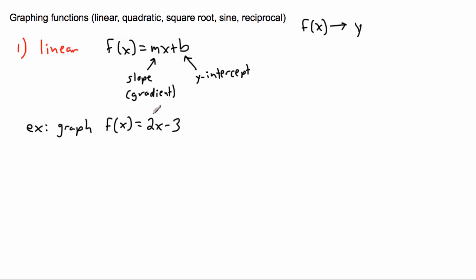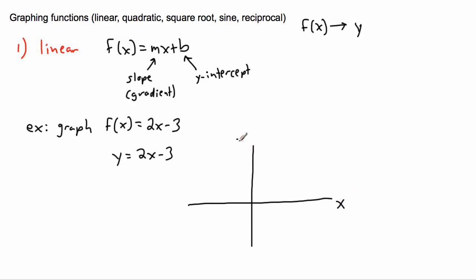So if I want to graph f(x) = 2x − 3, the first thing I do is replace f(x) with y, giving y = 2x − 3. Looking at this equation, the y-intercept is −3 — that's where the line crosses the y-axis — and the slope, or gradient, is 2.